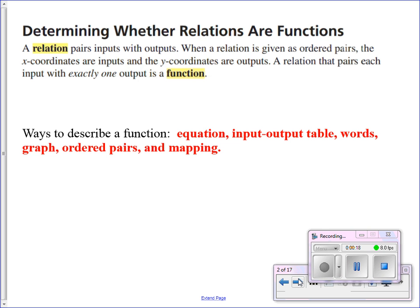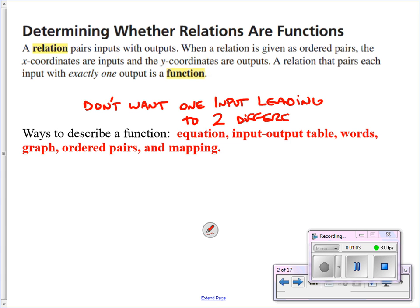The first thing we're going to do is determine whether or not a relation — anything that connects an input and an output, or that connects two variables — is a function. A relation can be ordered pairs, x's and y's, points that we plot, anything that relates two things, and that's why it's called a relation. A relation that pairs each input with exactly one output is called a function. So what we don't want is one input leading to two different outputs. That's the only thing that would cause us not to have a function, so we want to be on the lookout for that.